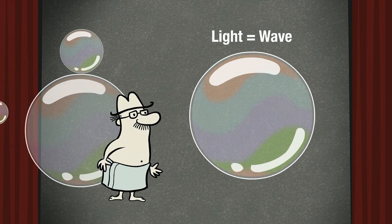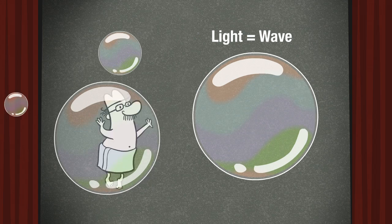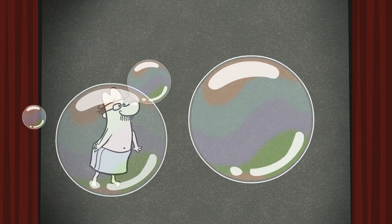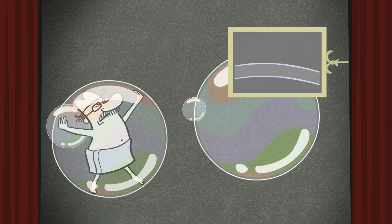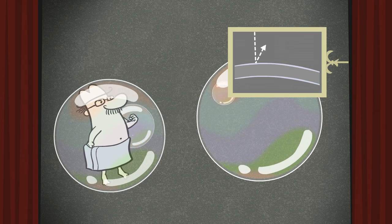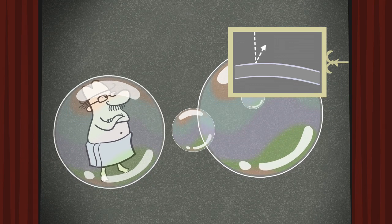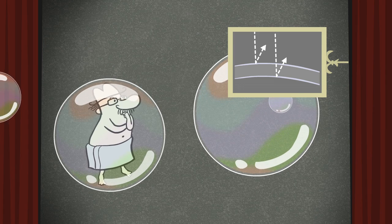Light is a wave, and different color light waves have different wavelengths. When a light wave hits the surface of a translucent film, some of it is reflected off the upper surface, some is reflected off the bottom surface, and the rest passes right through.